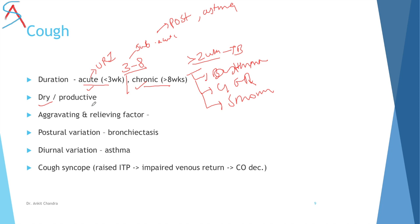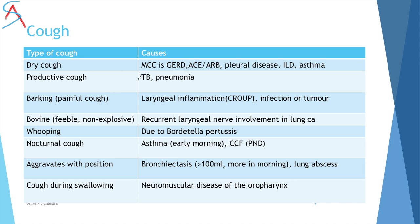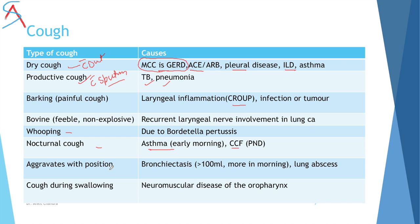Ask whether cough is dry or productive. The most common cause of dry cough is gastroesophageal reflux disease (GERD). It can also be caused by ACE inhibitors or certain ARBs, pleural disease, interstitial lung disease, or asthma. Productive cough with sputum can be due to TB or pneumonia. Barking cough is a painful cough seen in croup. Bovine cough is feeble and non-explosive, seen in recurrent laryngeal nerve palsy.